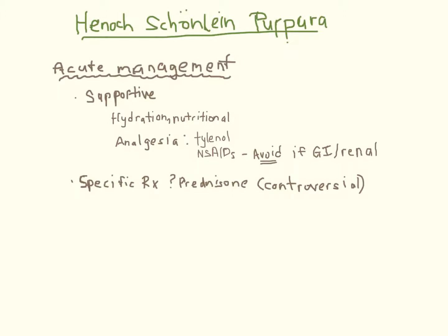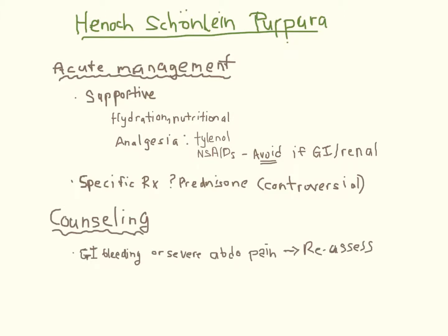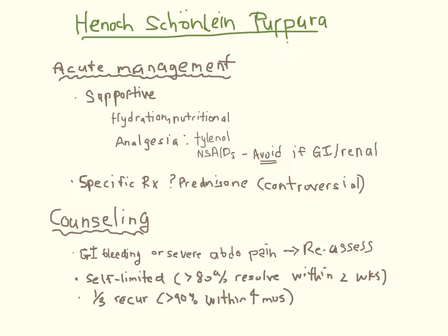Counseling is important. Key points are: number one, children must be reassessed if they develop severe abdominal pain or frank gastrointestinal bleeding; number two, the disease is self-limited; but number three, it commonly recurs, with almost all events occurring within four months.